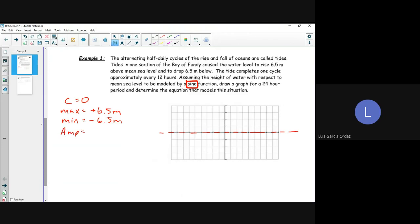Now what would our amplitude be? So it would be 6.5 minus negative 6.5 over 2, which is equal to 13 divided by 2, which is equal to 6.5. So we have our a and our c.